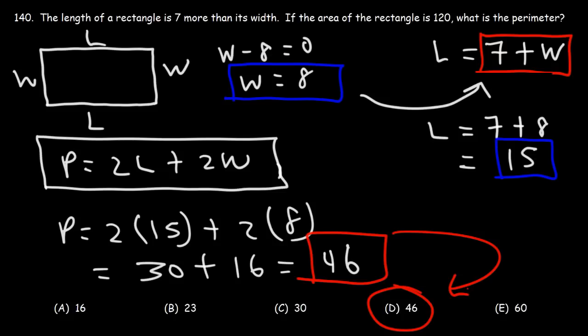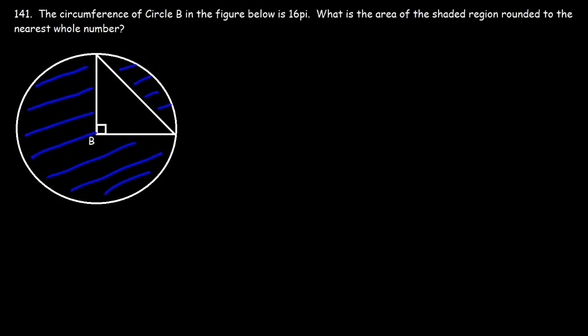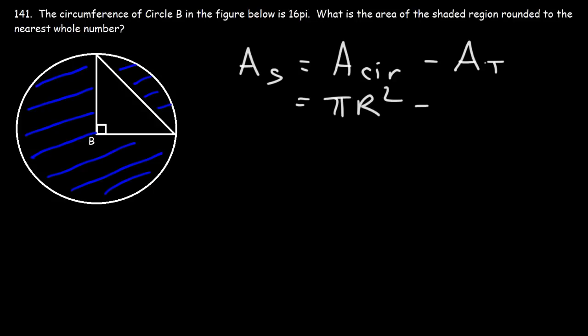Number 141. The circumference of circle B in the figure below is 16π. What is the area of the shaded region, rounded to the nearest whole number? B is the center of the circle. To calculate the area of the shaded region, we need to calculate the area of the circle and subtract the area of the triangle. The area of the circle is πr² and the area of the triangle is one-half base times height.